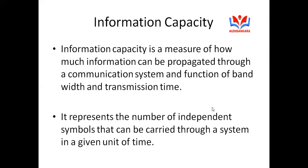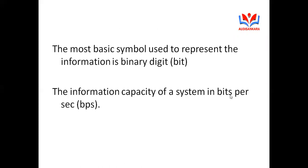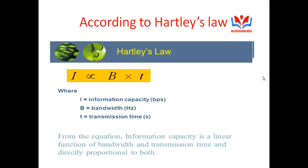Information capacity represents the number of independent symbols — such as commas, colons, or special characters — that can be carried through a system in a given unit of time. The most basic symbol used to represent information is binary digits, that is, ones and zeros. This information capacity is measured in terms of bits per second, which is very important for short-answer questions.